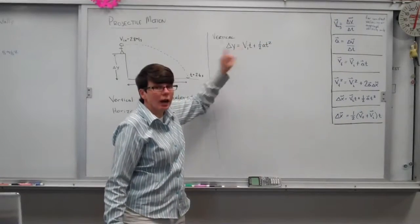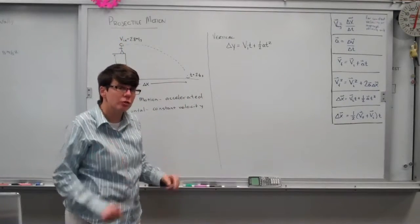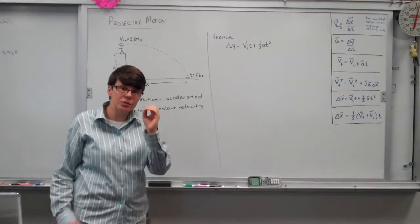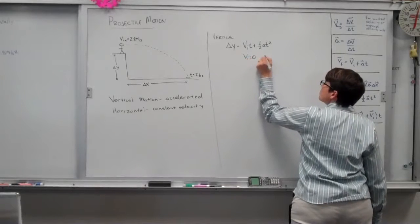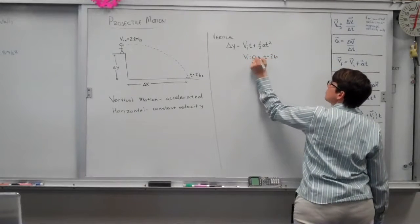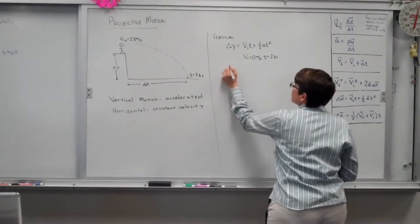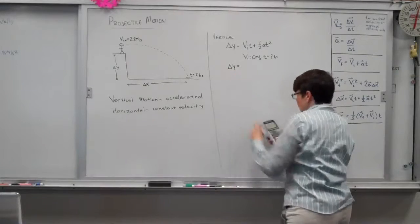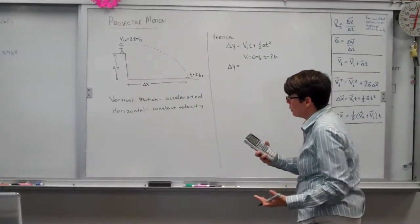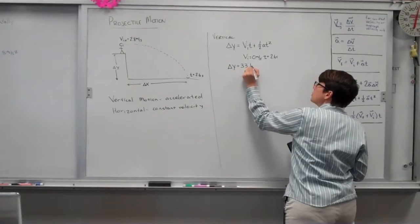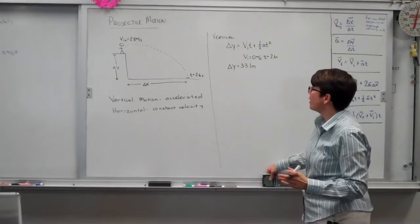Okay, the initial velocity. I know it's tempting to want to grab this number because it was given as an initial velocity. Not true. The vertical velocity is zero. Solving that problem, the math comes out to be 33.1 meters. That's one part of the question, how high is the diving board?